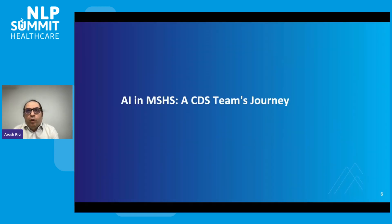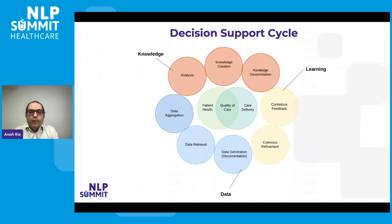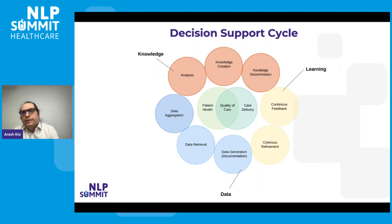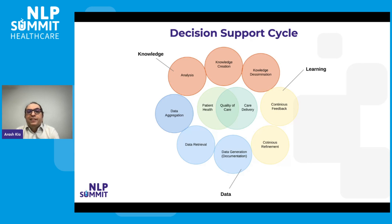Now let's see what we have done so far in MSHS. I want to start with where we conceptualize the whole optimization strategy. The main focus is the decision support cycle — everything happening at the bedside — and that cycle has three different components: data, knowledge, and learning.